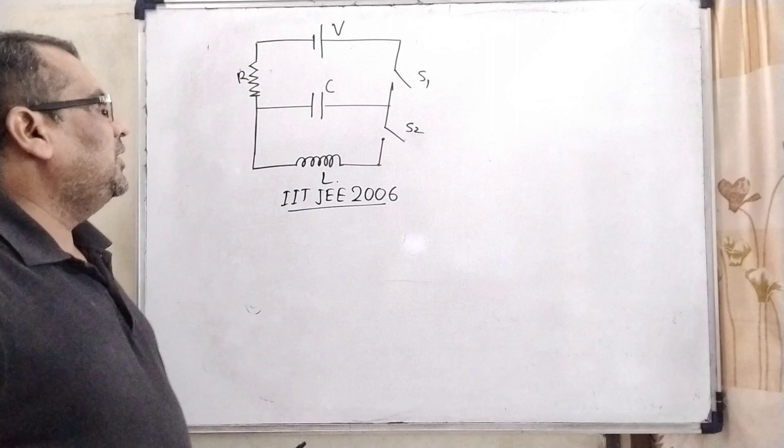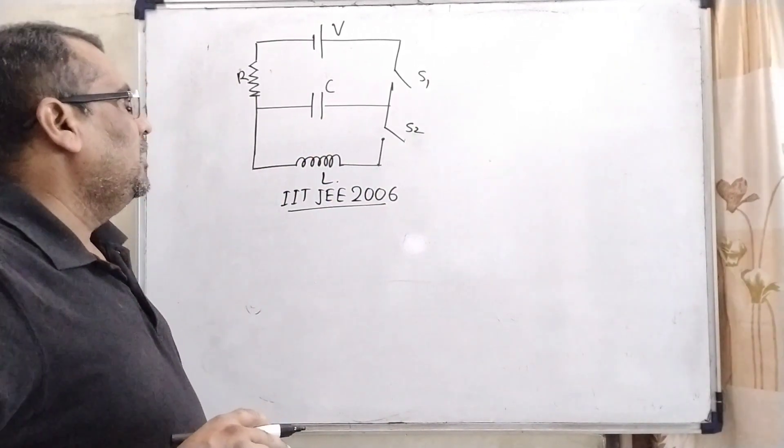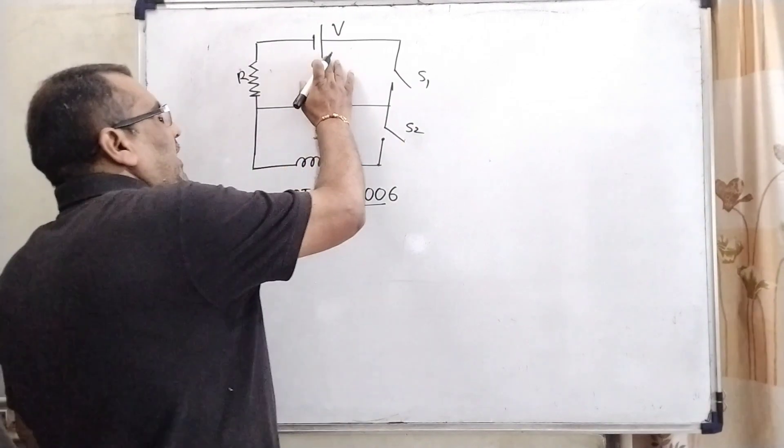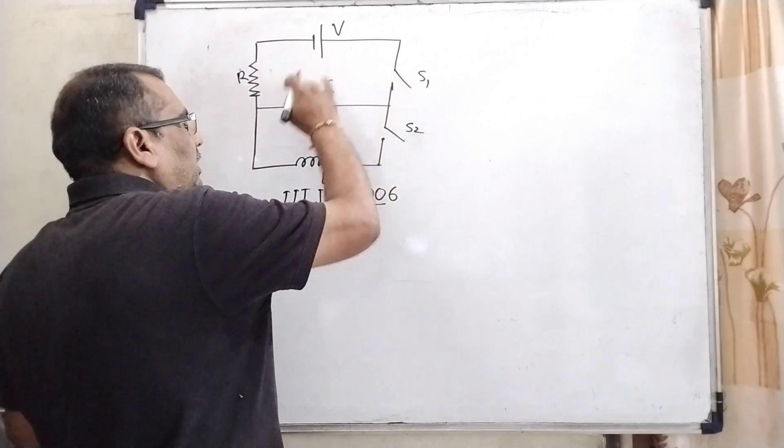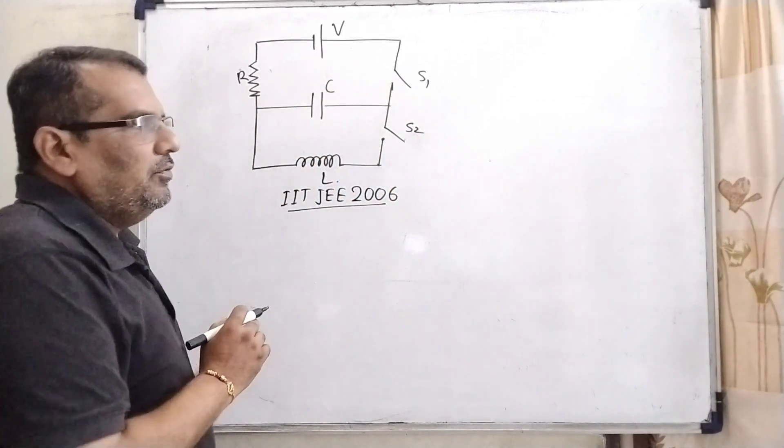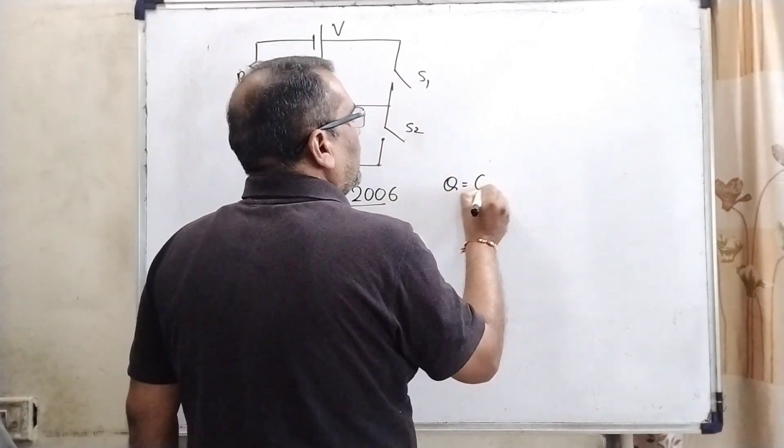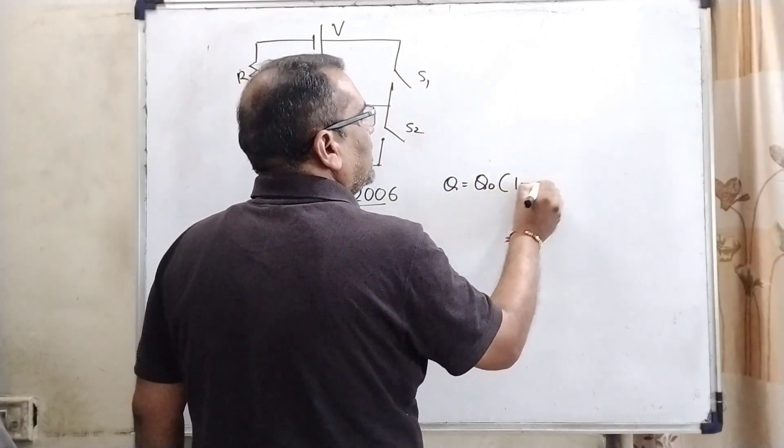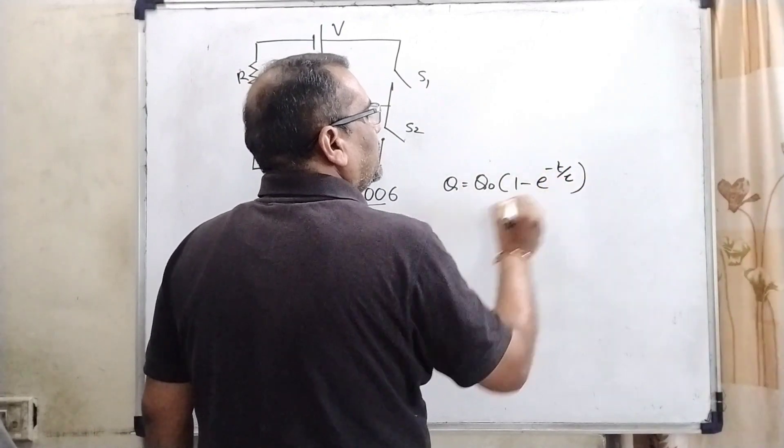Actually, this is an LC circuit or oscillator. Whenever this is battery, capacitor and inductor, whenever S1 is closed, it means it becomes charged. And what is the formula of charging? That is Q equal to Q naught into (1 minus e raised to power minus t by tau).